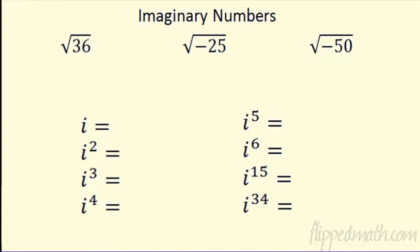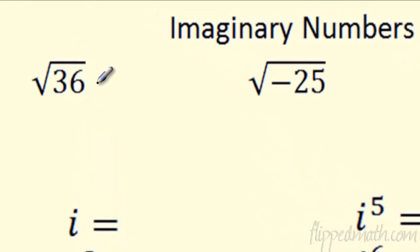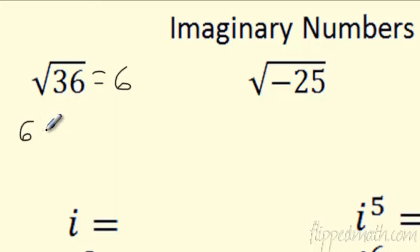Let's take a look at what is an imaginary number. Well, let's take a look at some things we know. Square root of 36 — that is just 6. 6 times 6 is 36.